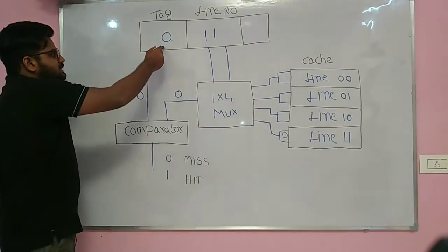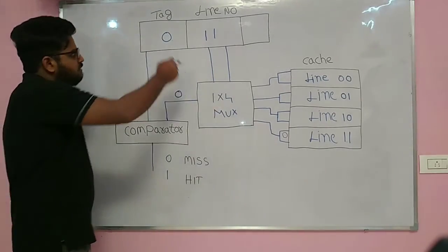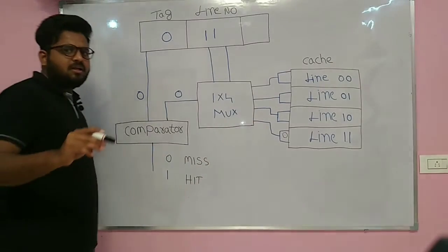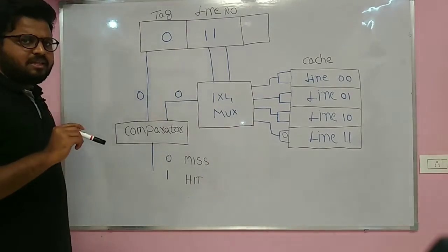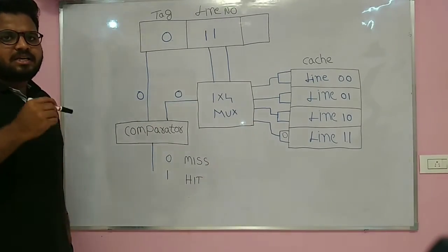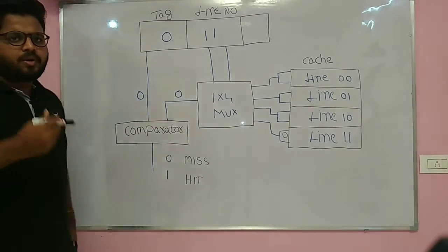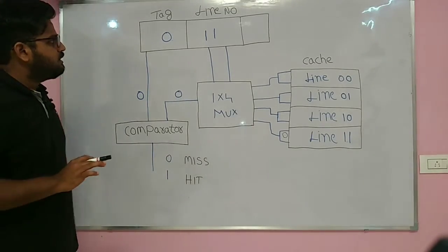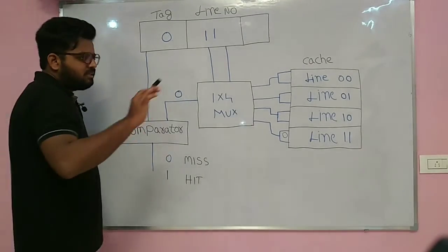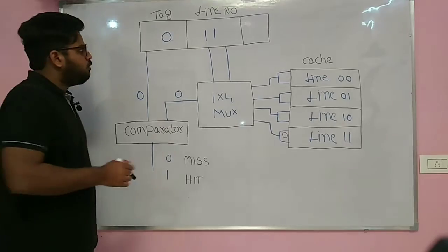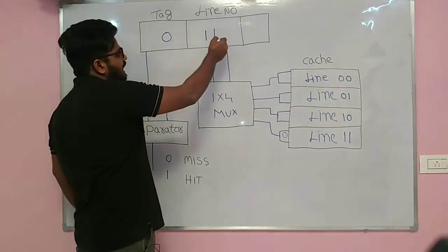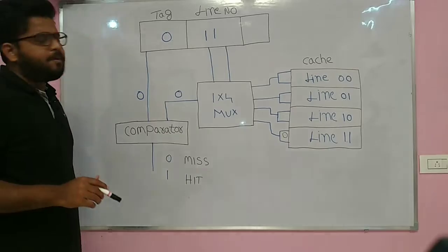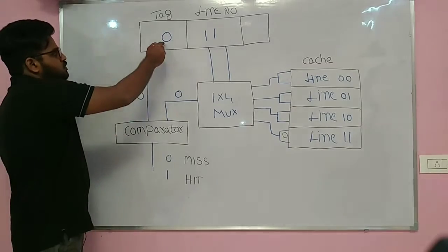By using the line number, we go to the particular line in cache and compare the tag bits. If the tag bit is matching, then there is a cache hit; otherwise there is a cache miss. For example, the CPU says go to cache line number 3 and match the tag bit zero.